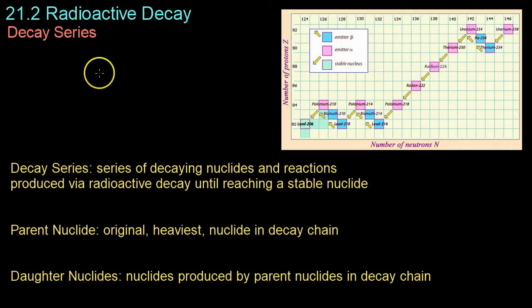Moving on now to the concept of decay series. Over here, we have the decay series of uranium-238, and a decay series is basically a list of decaying nuclides represented by a box on the chart, and the corresponding reactions represented by these arrows going from one nuclide to another. The parent nuclide is the original and heaviest nuclide in the decay chain. In that case, it's uranium-238.